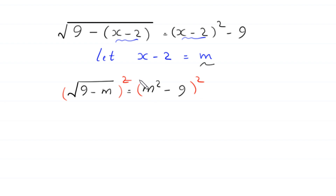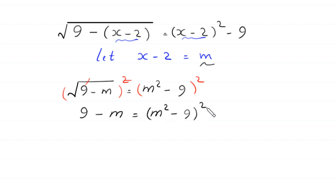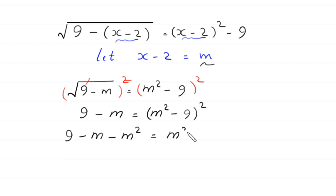We square both sides to cancel the square root. The left-hand side becomes 9 minus m, and the right-hand side becomes (m squared minus 9) whole squared. Subtracting m squared from both sides gives 9 minus m squared equals (m squared minus 9) squared.